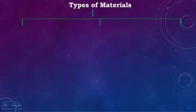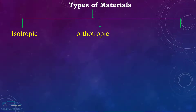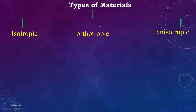Here we have three types of material: one is called an isotropic material, the second is called an orthotropic material, and the last one is called an anisotropic material. Let's have a detailed look at each of them one by one.